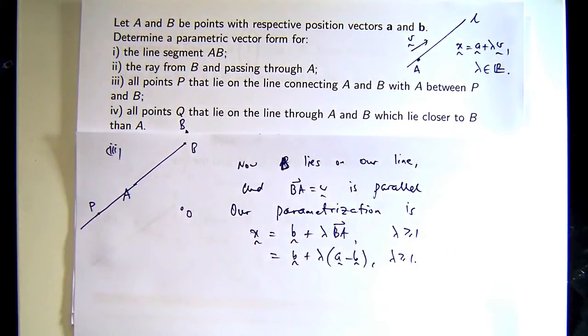Now, there's another way to parametrize that line. Can anyone see it? Would it be greater than or equal to 1? Because if it's equal to 1, then we're not between, with A between? Oh, it depends how you define between. That's a good point. So if you're taking the between as strictly between, then yes, you should have a strict inequality on your lambda. That's a good question.